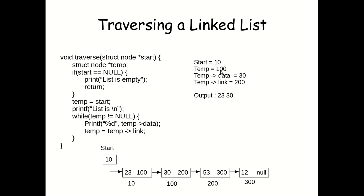Now temp is 100, so temp->data will be 30 and temp->link will be 200. It will print temp->data, which is 30. So the output is now 30.